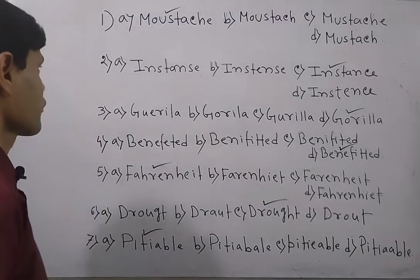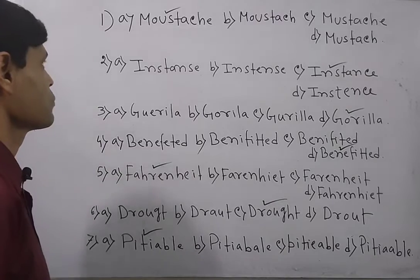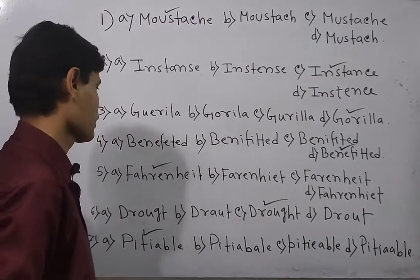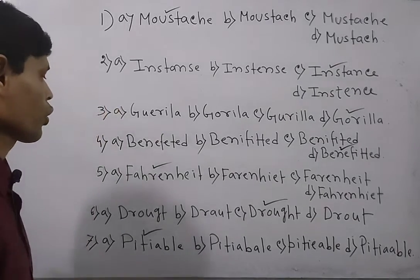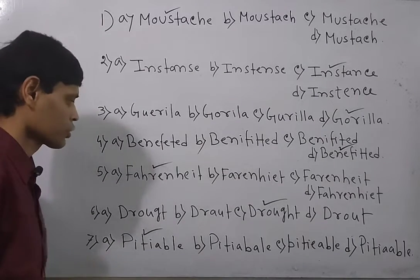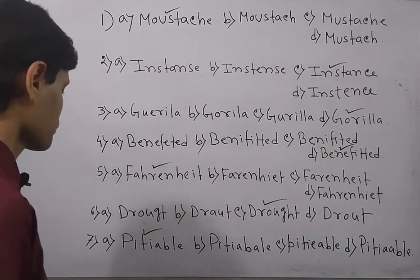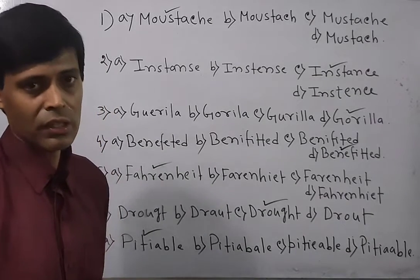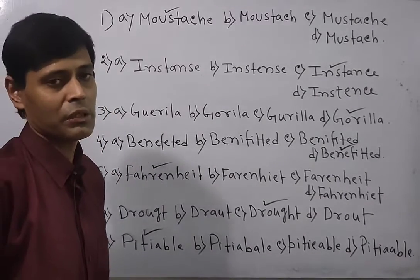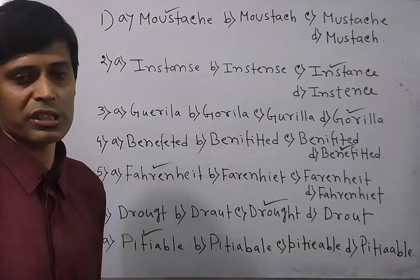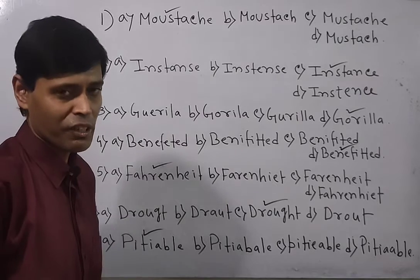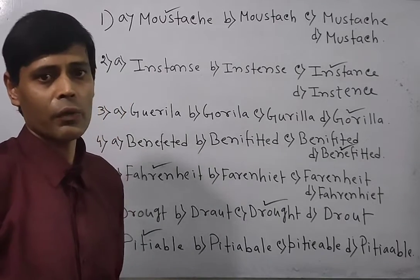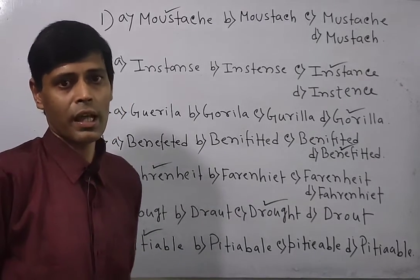Now let's look at the overall answers. First answer — option A, moustache. Second — option C, instance. Third — option D, gorilla. Fourth — option D, benefited. Fifth — option A, Fahrenheit. Sixth — option C, drought. And the last one — option A, pitiable. This is my class for all of you as far as spelling mistakes are concerned. If you haven't understood any part, you can comment in the comment box. If you like my video, please share it, subscribe to my channel, and hit the notification bell icon for more such videos. Have a very good day!